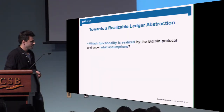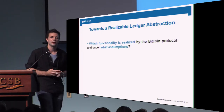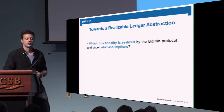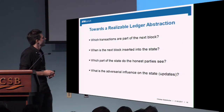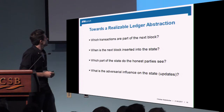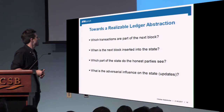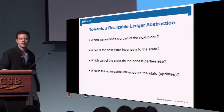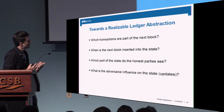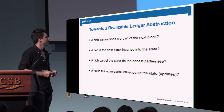The roadmap for the rest of this talk is: we would like to define a ledger functionality which is realizable by the Bitcoin backbone protocol. The important questions are: which transactions are part of the next block, when is the next block inserted into the state, which part of the state do honest parties see, and what is the adversarial influence on the state itself? These are the questions we will answer in the following.